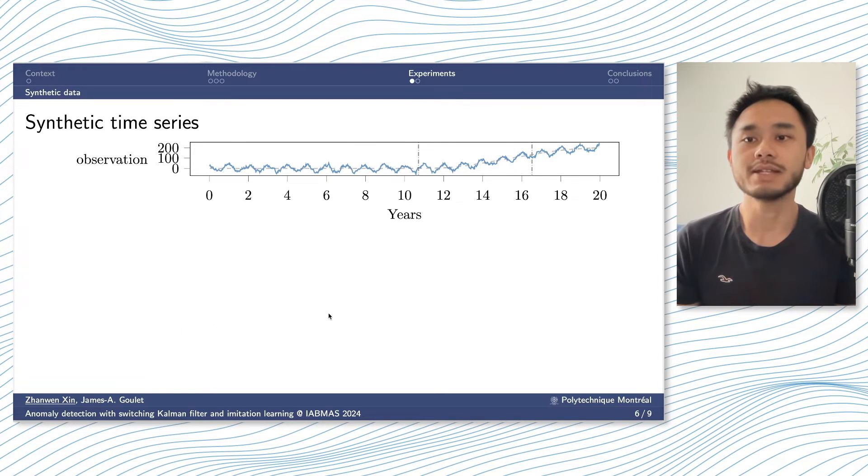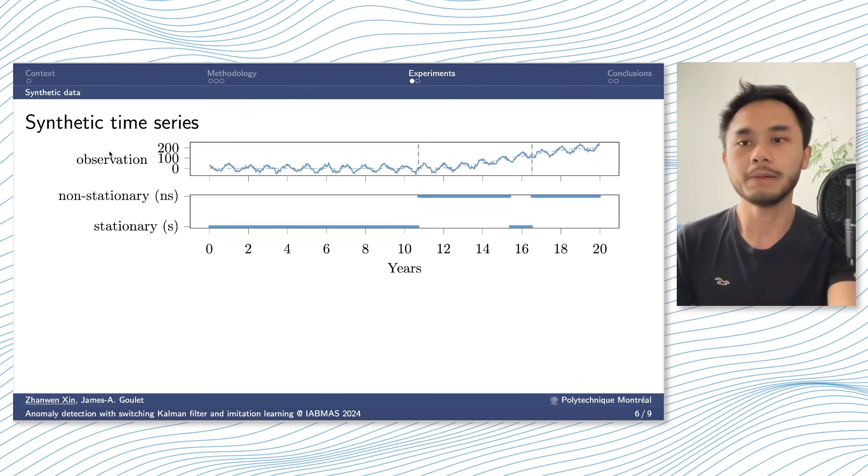We test the agent's performance on a synthetic time series as well as a real one. On this slide, we have the synthetic time series that spans for 20 years. And we have two anomalies happening here, indicated by the vertical dashed line. The labels of this time series are shown in these figures. At the beginning, the speed is constant, all the measurements are labeled as stationary. And then the speed changes, and we label this measurement as non-stationary, and it goes back to stationary again. And when the second anomaly happens, the measurements are labeled as non-stationary again.